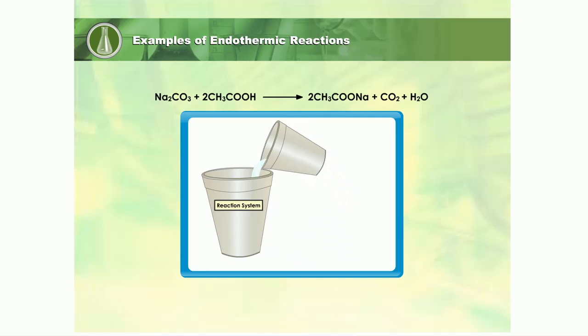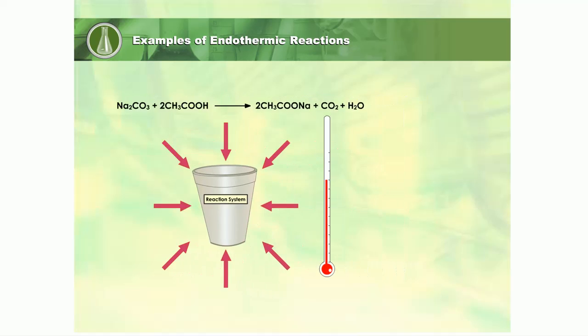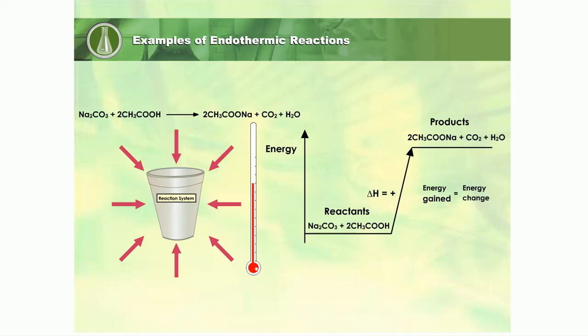When endothermic reactions occur, this energy change can often be detected as a temperature change. This means the products have a different energy content from the original reactants, as can be seen in the energy level diagram.